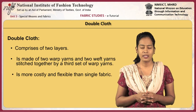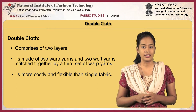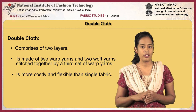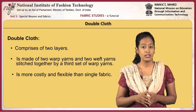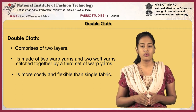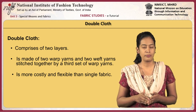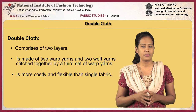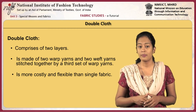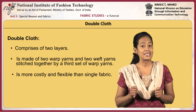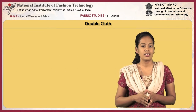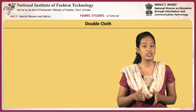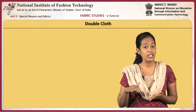The fabric is comprised of two layers. Each layer is made of two sets of yarns. And hence, the double cloth is made of two warp yarns and two weft yarns. They are stitched together by a third set of warp yarns. The fabric is costly and flexible than a single fabric. In certain cases, the double cloth is split into two layers and used as fabrics with surface fibers.